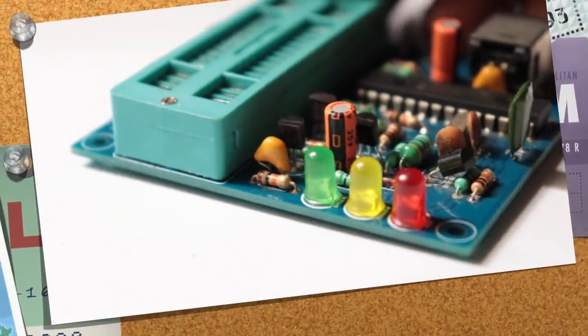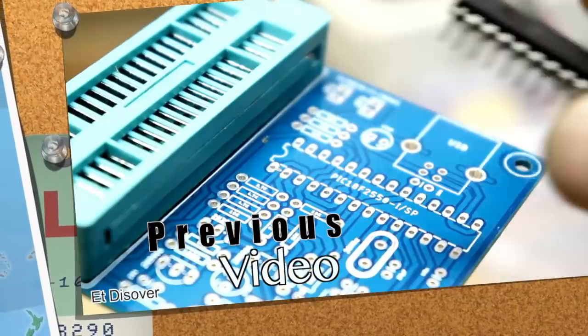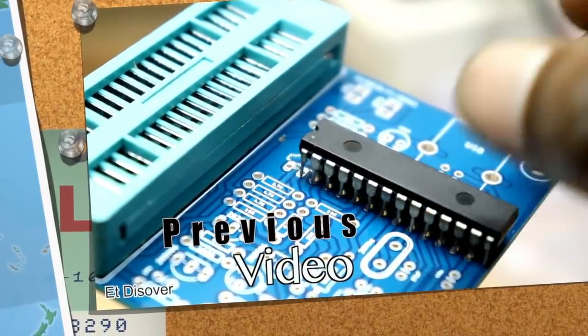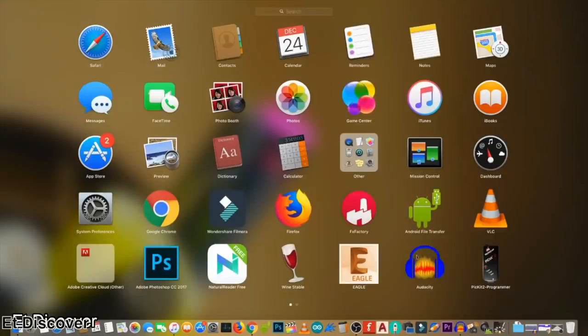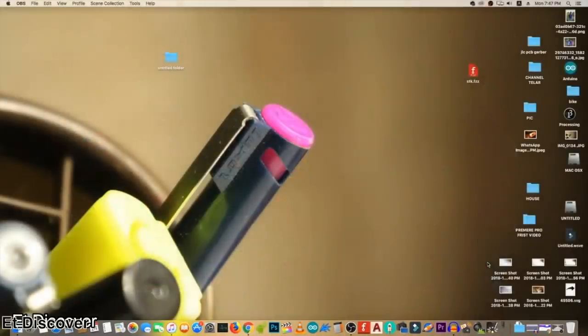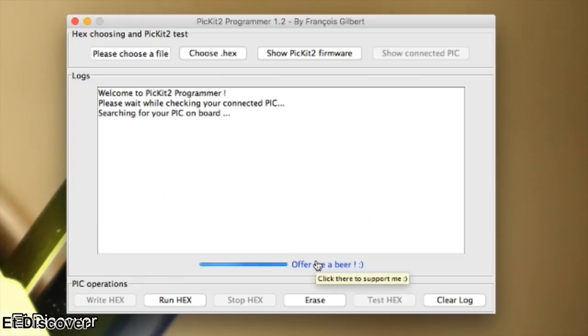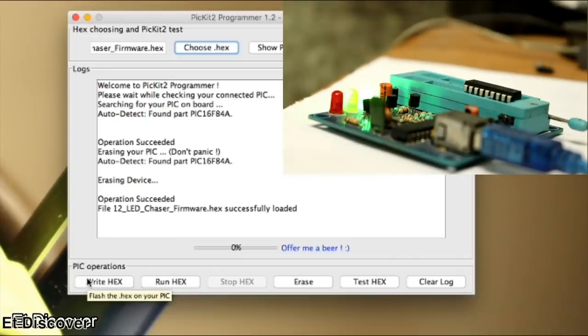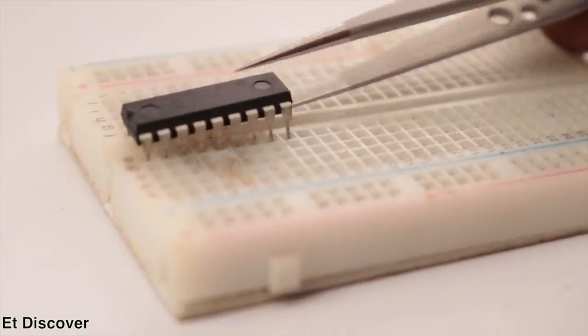If you want to make this programmer, watch my previous video. You can find the video link in the description box. I connect a USB cable with my PIC programmer and the other end to my computer. I open a PIC programmer application and put a clock hex file in this IC. You can download this hex file from the link in the description. After uploading the code, I mount this IC on a breadboard for testing purposes.